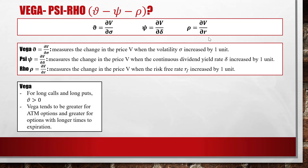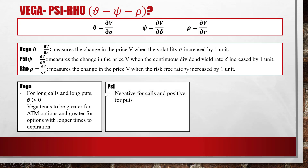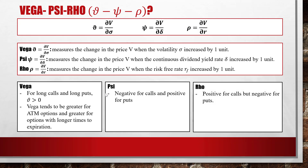For Vega: for long call and long put, Vega is always positive. Vega tends to be greater for ATM options and greater for options with longer time to expiration — this can be proved by differentiating the V function with respect to sigma. Psi is negative for calls and positive for puts. Rho is opposite to Psi: Rho is positive for calls but negative for puts.